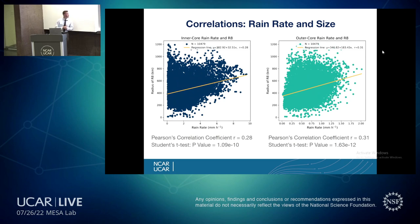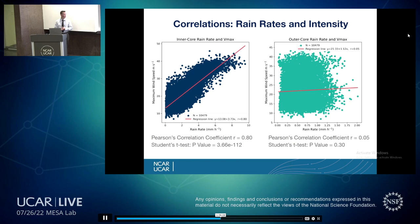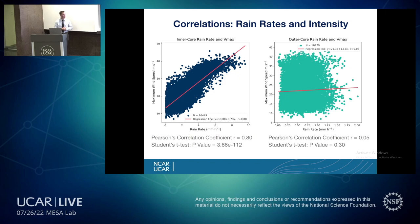For results: inner core rain rates vs. R8 on the left and outer core rain rates vs. R8 on the right. Both the inner core and outer core are correlated with size, with r values of 0.28 and 0.31 respectively, and very small p-values confirming significance. Looking at rain rates versus intensity, there is a very strong correlation between inner core rain rates and maximum intensity, with an r value of 0.8 and an incredibly small p-value — we can say with very high confidence those are correlated. For outer core rain rates versus intensity, there is no correlation at all.